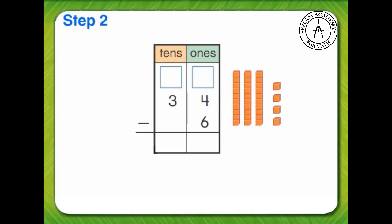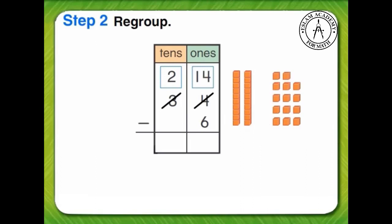Next, we need to regroup 1-10 as 10 1s. That leaves us with 2 10s. How many 1s do we have now? 4 1s plus 10 1s equals 14 1s.